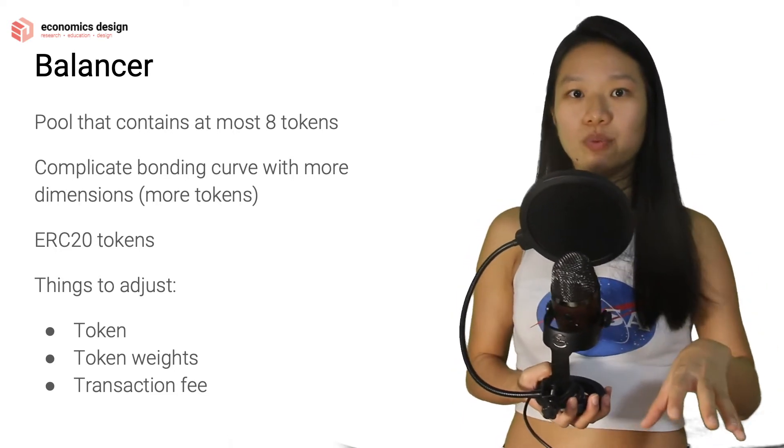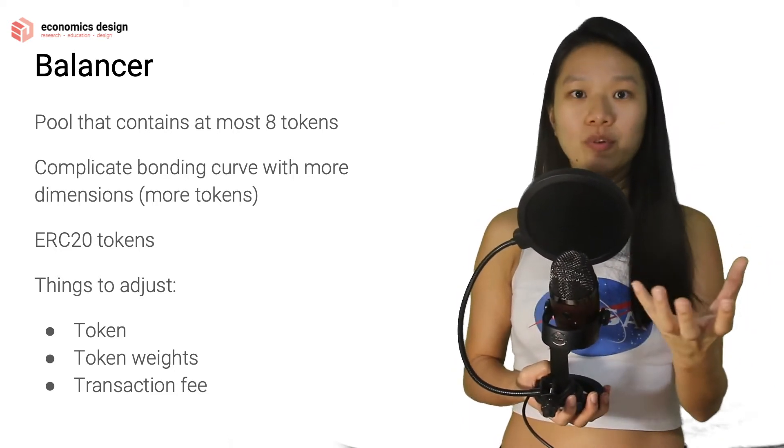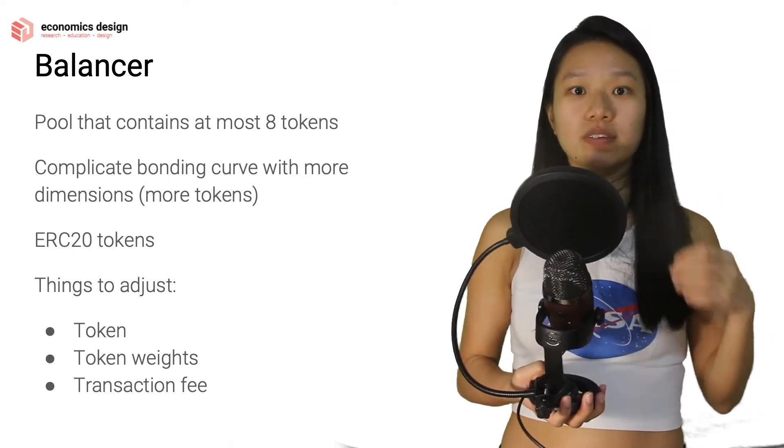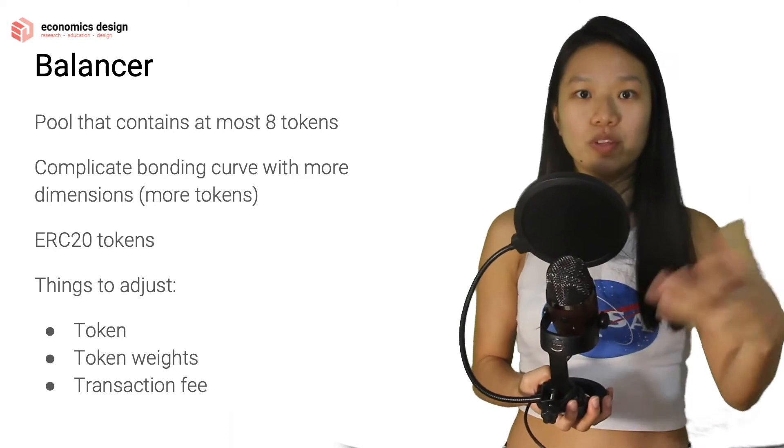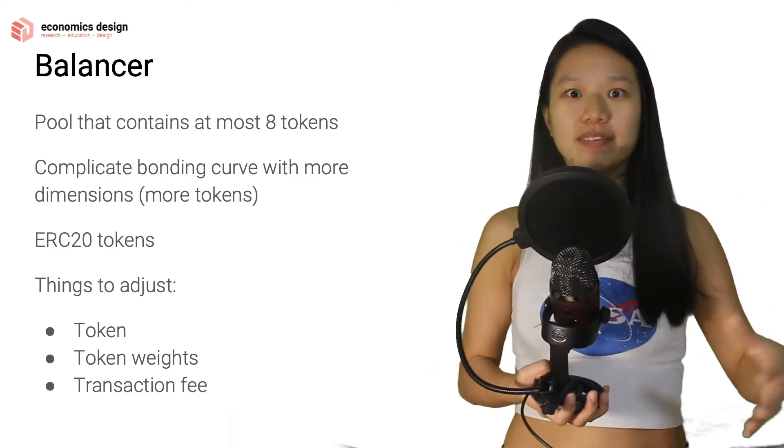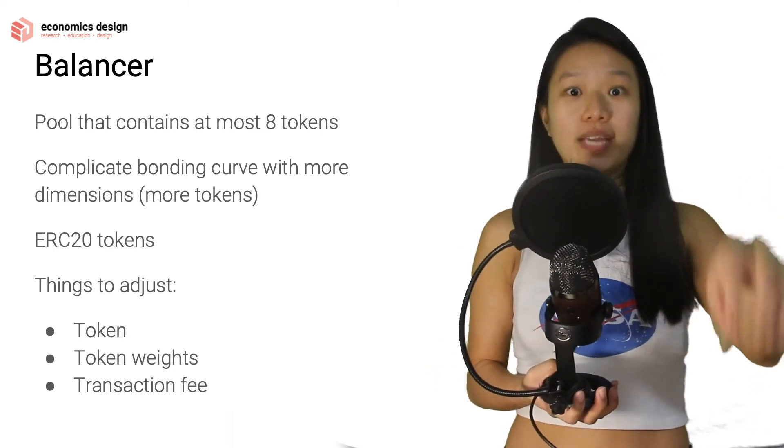In the same way, Balancer also works like that in a pool. You get to choose up to eight different tokens. Then you as the owner and anyone who wants to join your pool has to provide those tokens into this pool - this huge picnic basket that everyone gets to put items in.